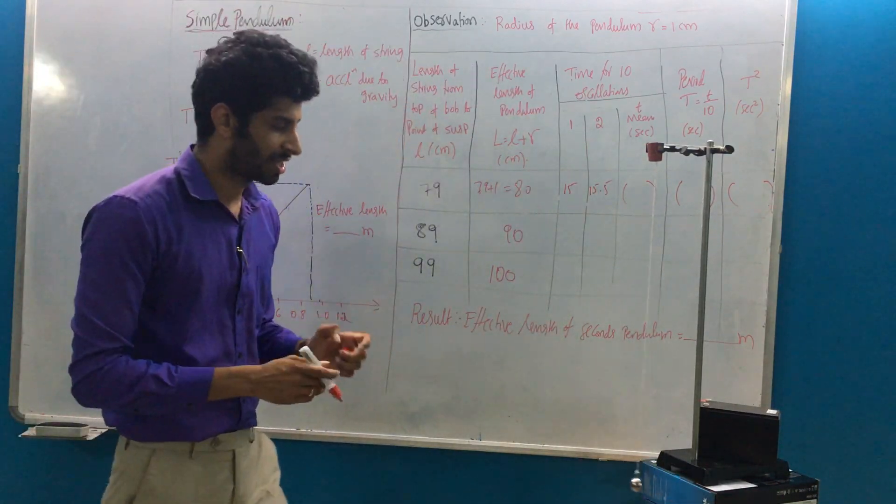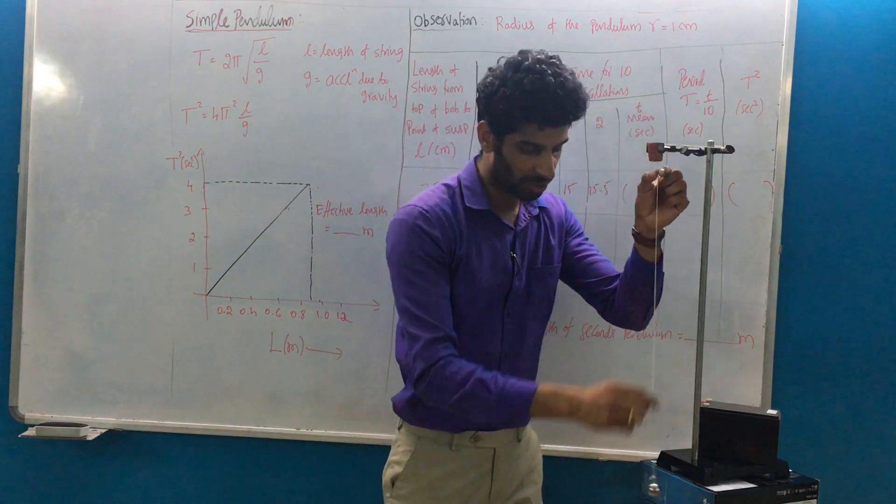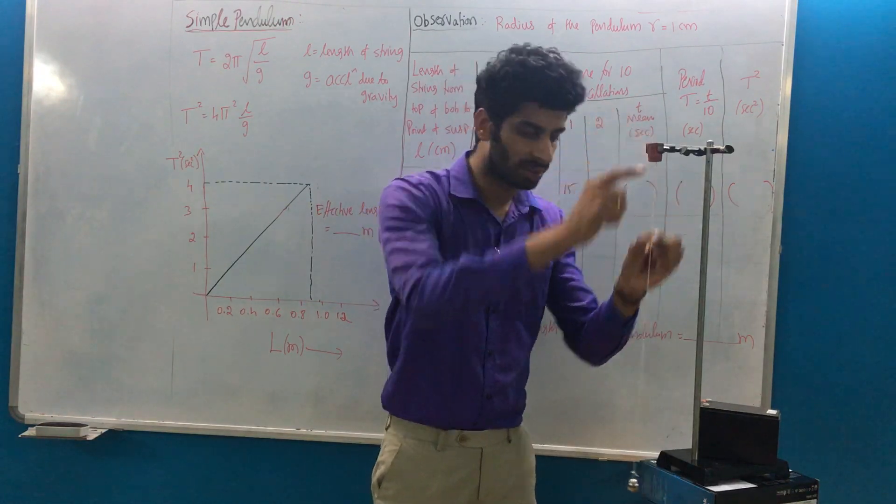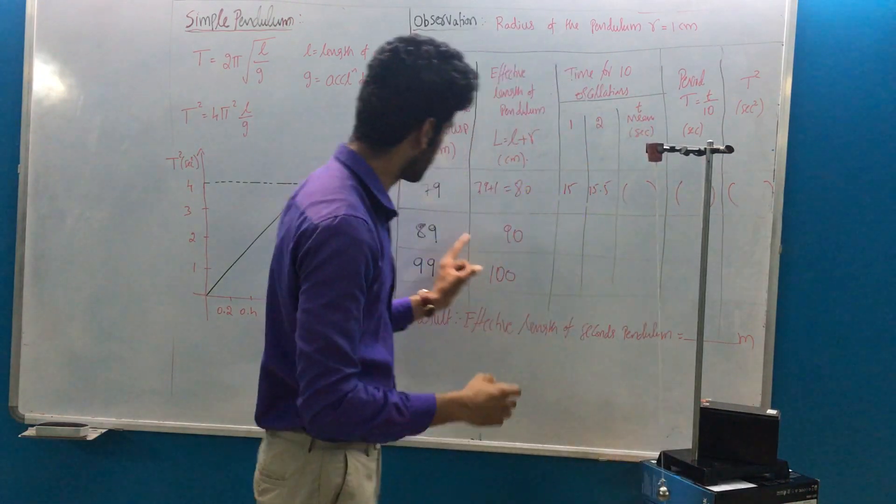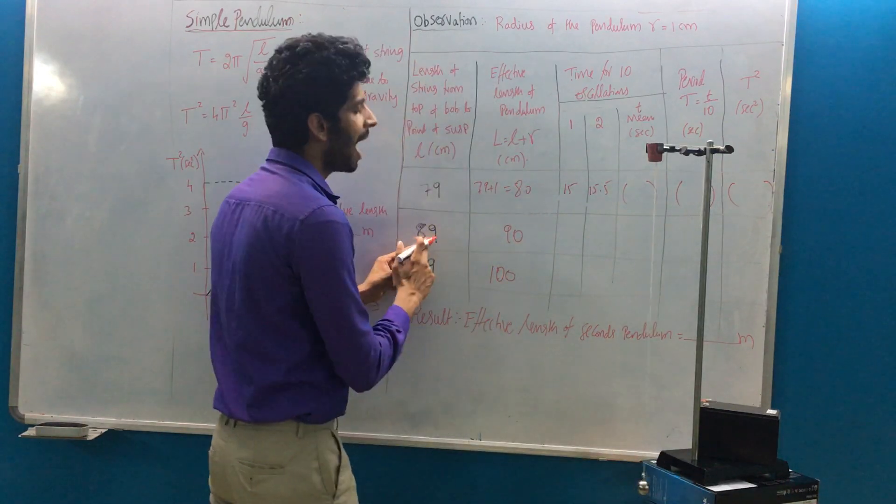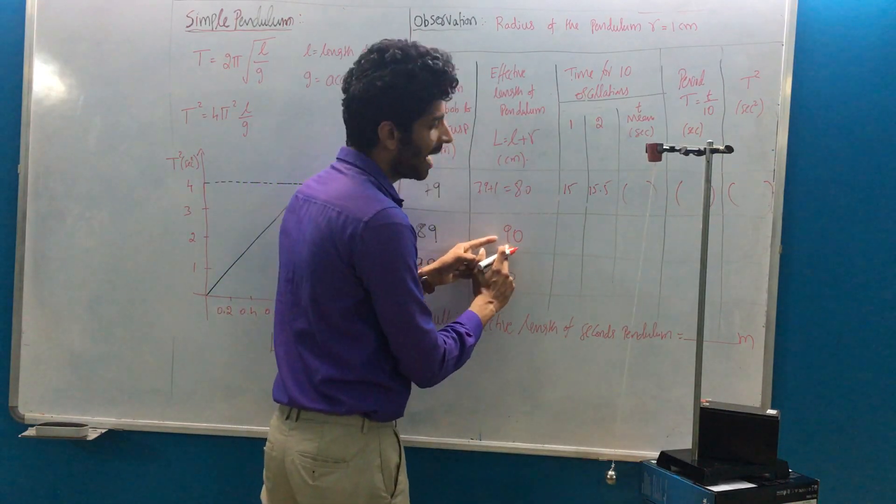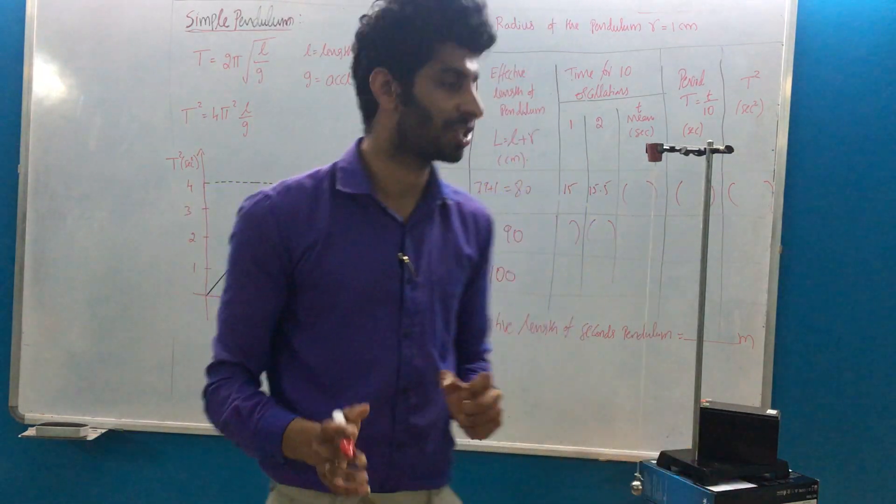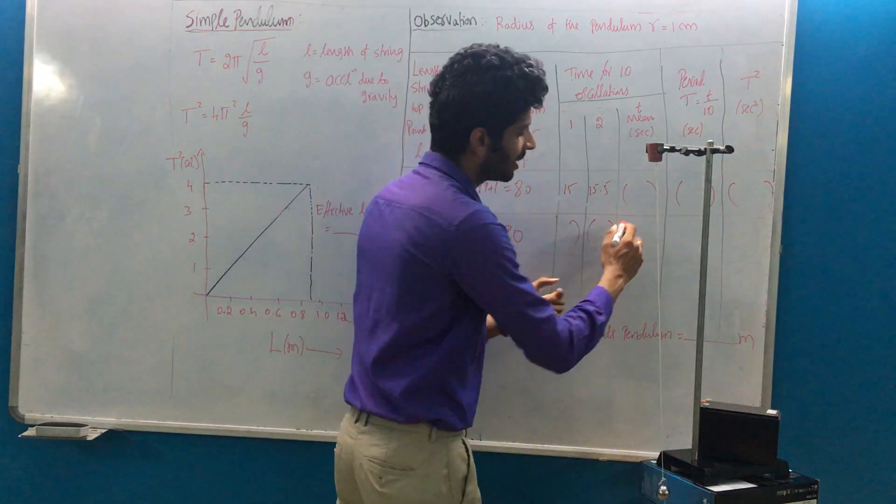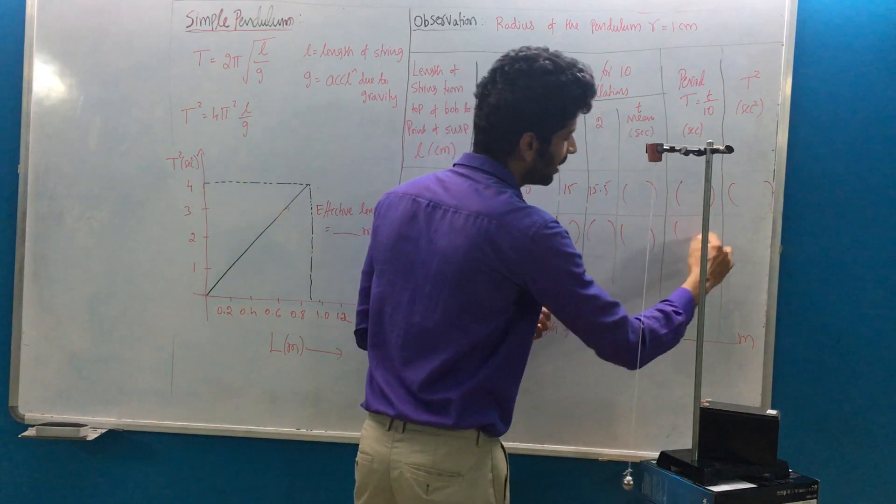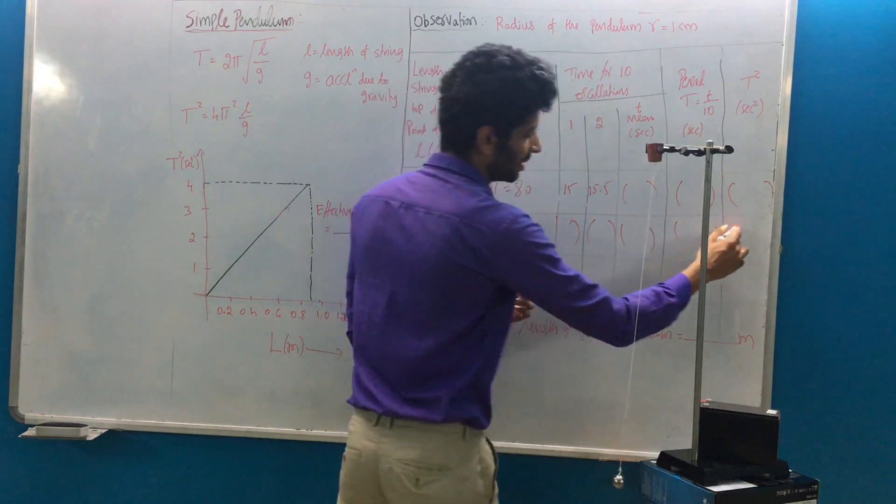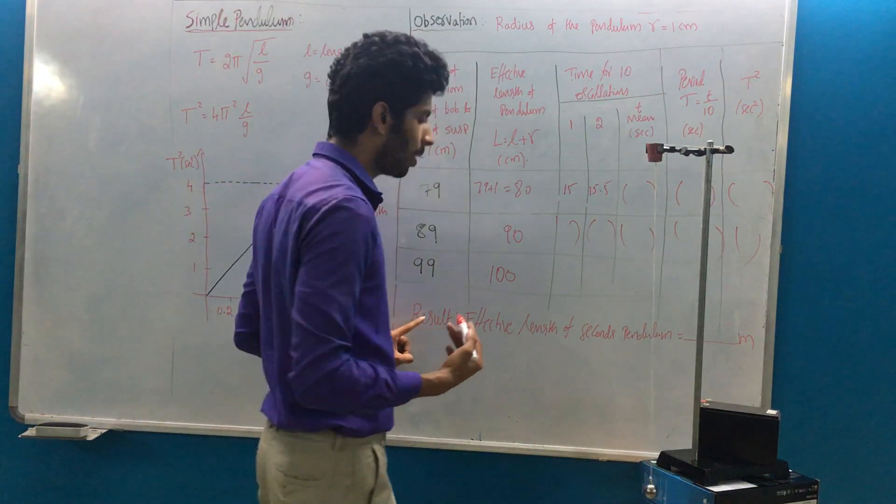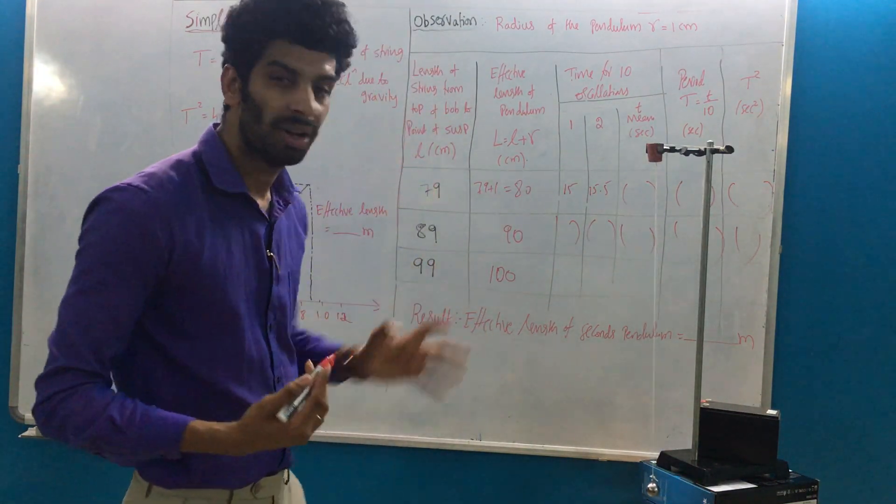Next, you just change the length from the point of suspension to the top of the bob. Increase the length by 10 centimeters, so you'll get 89 cm plus the radius gives 90 cm. Again you have to do two more trials for ten oscillations, take the mean, divide by 10, and square it. Similarly you can do for 99 cm, 109 cm, 119 cm. You can go for five trials total.